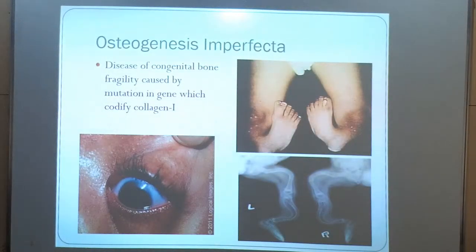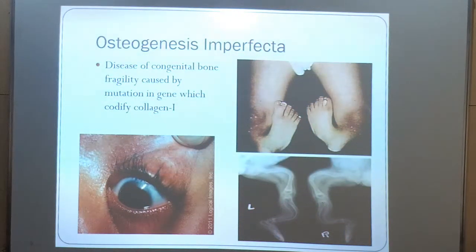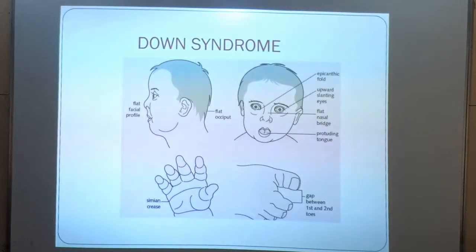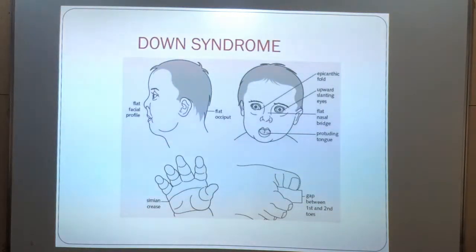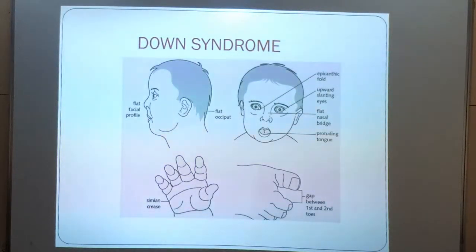These are pictures of osteogenesis imperfecta — a congenital bone fragility caused by mutation in the gene encoding collagen type 1. These are pictures of Down syndrome. Very typical features are seen: a gap between the first and second toes, a simian crease, a flat nasal bridge, and protruding tongue.